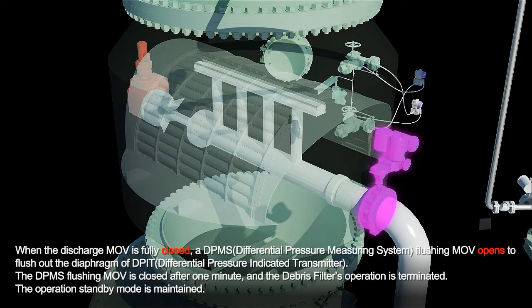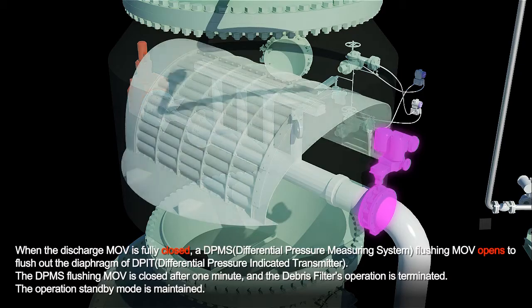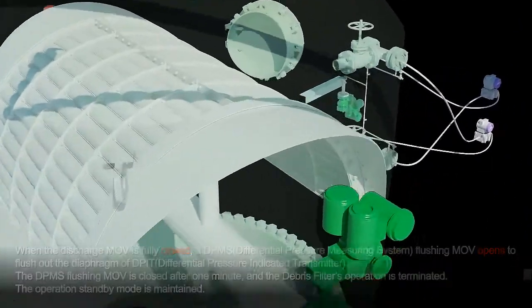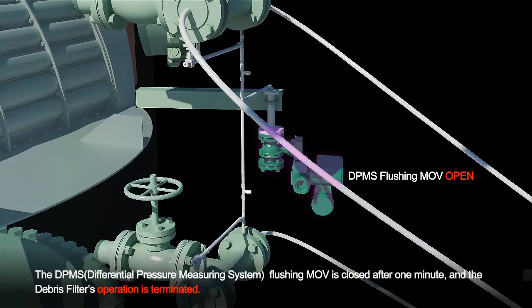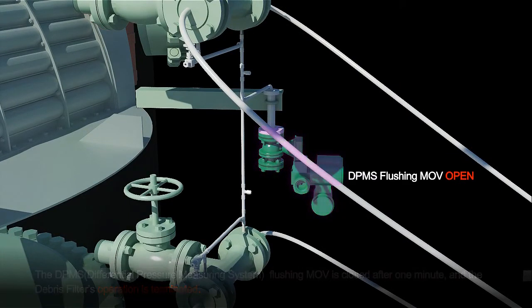When the discharge MOV is fully closed, a DP-MS flushing MOV opens to flush out the diaphragm of DP-IT. The DP-MS flushing MOV is closed after one minute and the debris filter's operation is terminated.